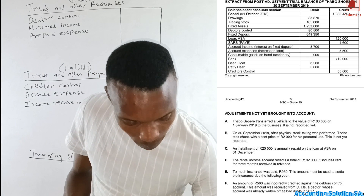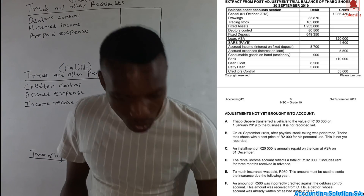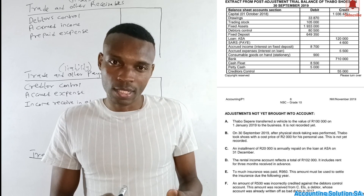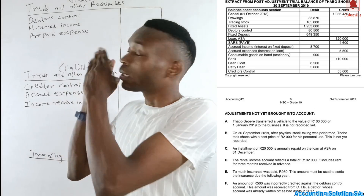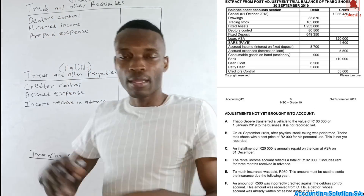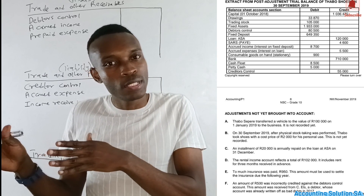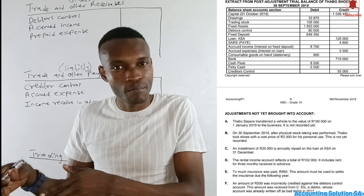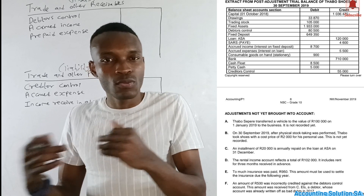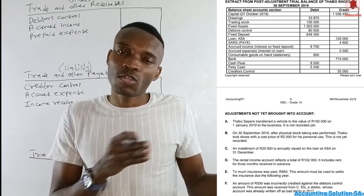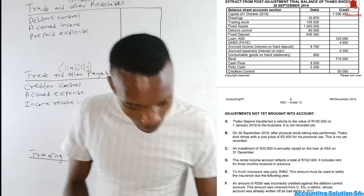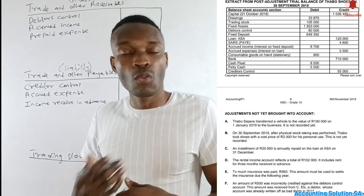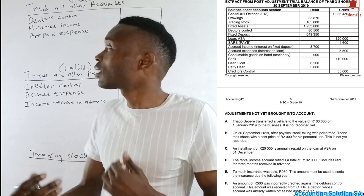Let's check the debtors control. We have it on the trial balance. An important principle: if an amount is on the debit side it is an asset; if on the credit side it is a liability, though an asset can appear on the credit side as a negative asset. Our debtors control balance is 80,500, but we must check additional information for any transactions affecting this amount.